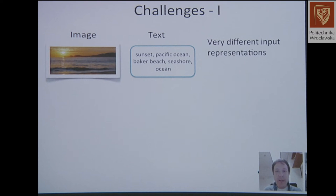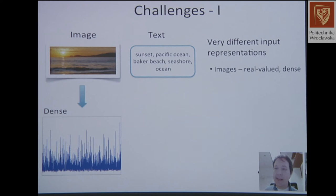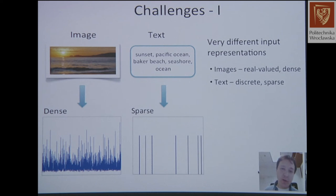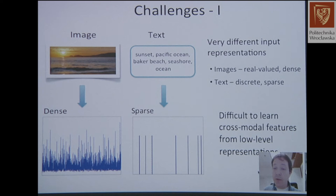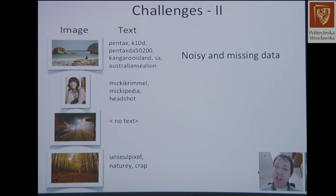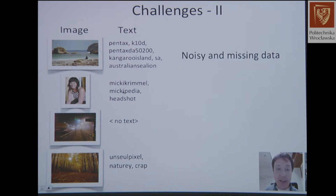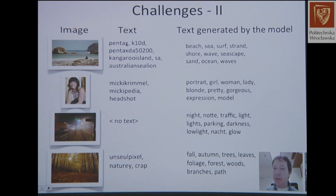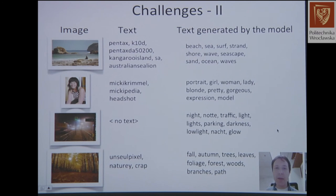Key challenges include very different input representations: images are typically dense while text is typically sparse — you may have five words versus thousands of pixels, making it difficult to learn cross-modal features from low-level representations. The data is also usually noisy and missing: for some images there's no text; for others, the tag is useful like 'headshot' but the rest describes only the camera used. You can see that the model does reasonably well in generating texts.